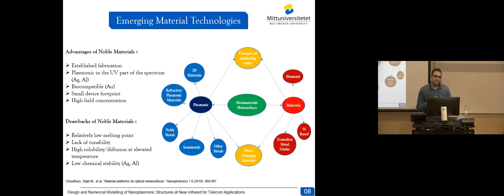Plasmon exists in the ultraviolet part of the spectrum for noble materials like copper, aluminum, gold, and silver. Specifically, gold is biocompatible and can be used for sensing and biosensing applications. It offers high field concentration and a small footprint. However, there are several disadvantages associated with noble materials, like relatively low melting point, low chemical stability, lack of tunability, and high solubility.